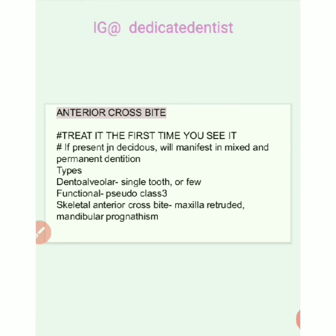Another problem we have to intercept is anterior crossbite — that is, reverse overjet — where the maxillary anteriors are present behind the mandibular anteriors. There are three types: dental alveolar, functional, and skeletal. This is a self-perpetuating condition: if present in deciduous dentition, it will manifest in mixed and permanent dentition, so we must treat it immediately. In dental alveolar crossbite, one or few teeth are involved. In functional crossbite, it is a pseudo Class III due to occlusal prematurity — the patient habitually brings the mandible forward while closing. In skeletal anterior crossbite, the problem lies in the skeleton: the maxilla is retruded behind the mandible, or the mandible is prognathic.